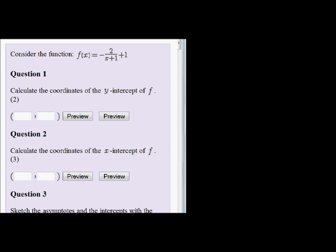Consider the function f(x) = -2/(x+1) + 1. The first question: calculate the coordinates of the y-intercept of f.